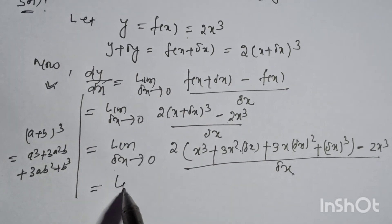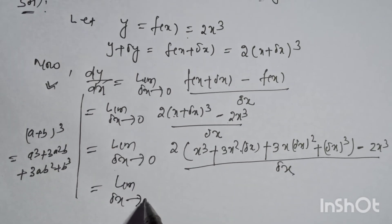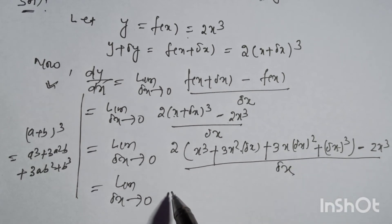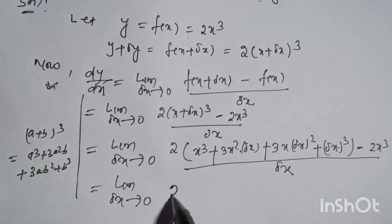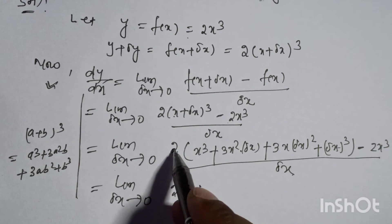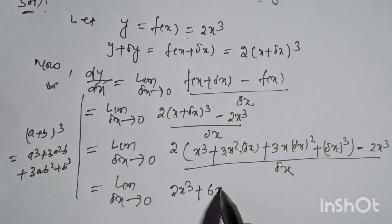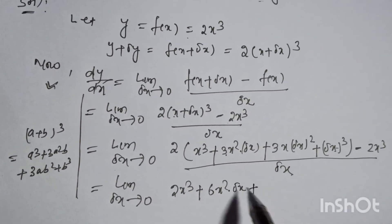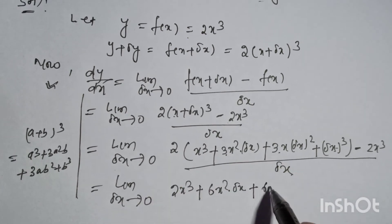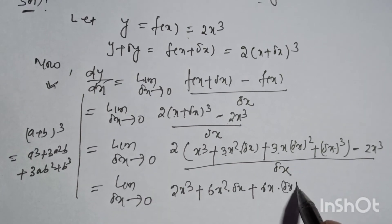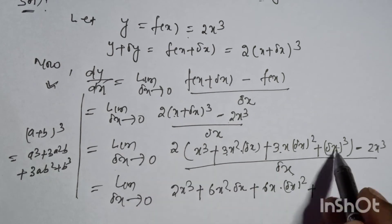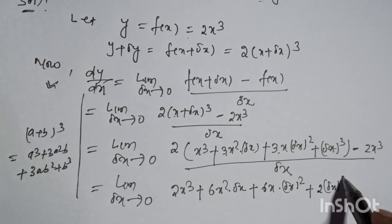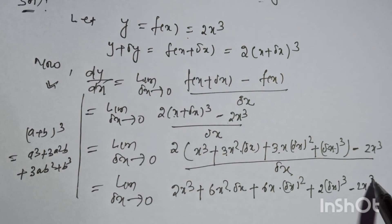Taking the limit as delta-x tends to 0 and multiplying through by 2: 2x³ plus 6x²·delta-x plus 6x·(delta-x)² plus 2·(delta-x)³ minus 2x³, all divided by delta-x.